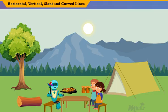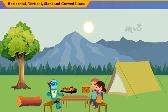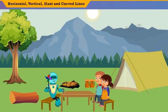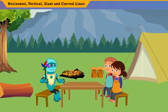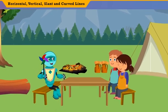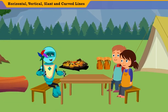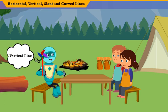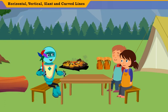Ben and Bella, look at this origami fan. The stick of the origami fan is a straight line. But did you know that this straight line is called a vertical line? Straight lines are vertical if they go straight up and down, or top to bottom, without going across.